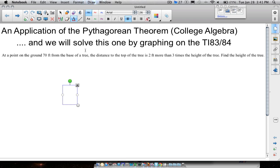But first of all we got to form the quadratic equation and what we have here is: at a point on the ground 70 feet from the base of a tree, the distance to the top of the tree is two feet more than three times the height of the tree. Find the height of the tree.